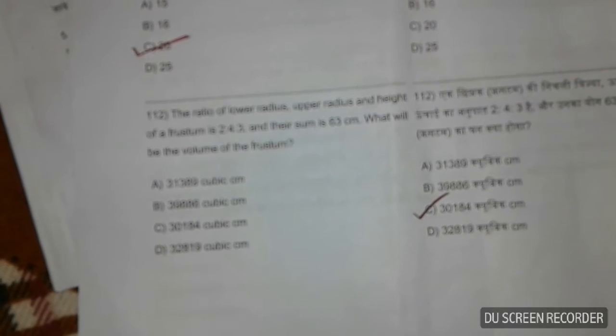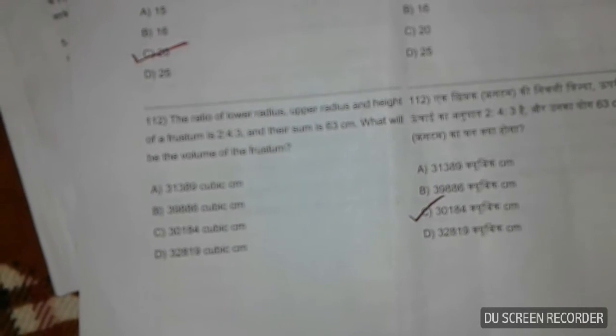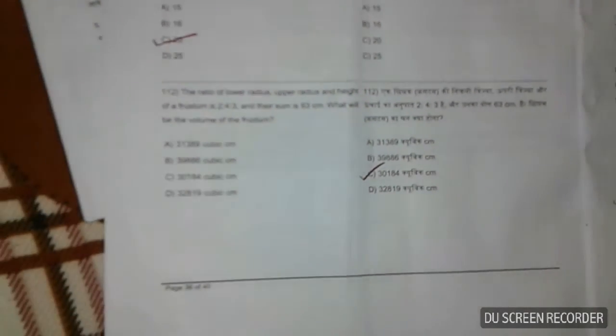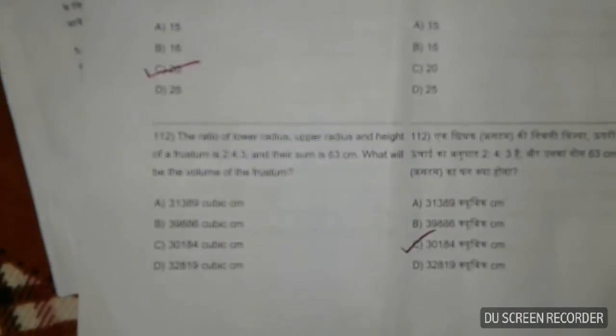The ratio of lower radius, upper radius, and height of a frustum is 2:4:3, and their sum is 63 centimeters. What will be the volume of the frustum? The answer is 30,184 cubic centimeters.